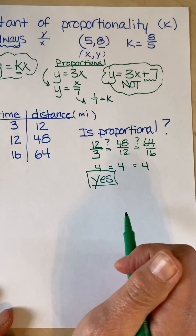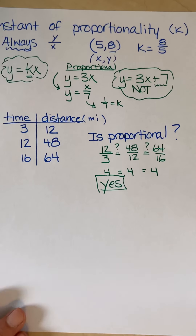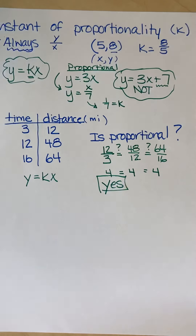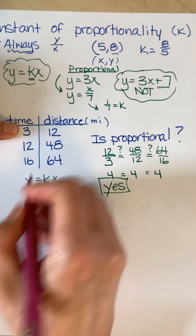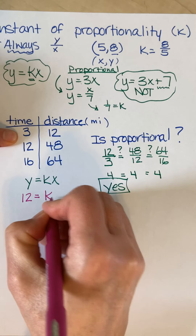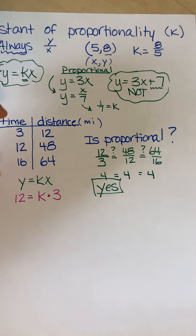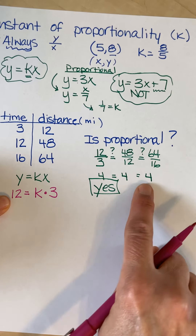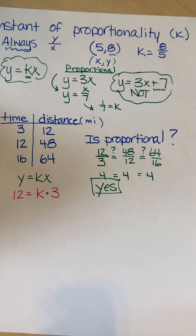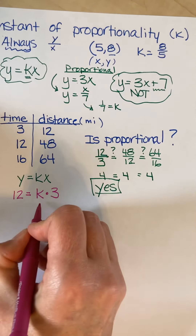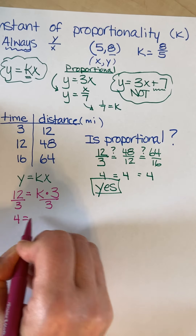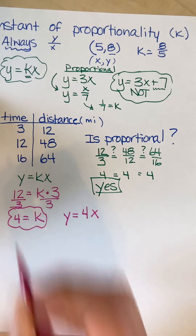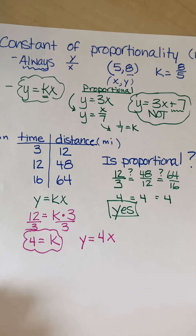Now if I wanted to write the equation for that, I use Y equals KX. I only need one point since they're all the same. Using (3, 12): 12 equals K times 3. I divide both sides by 3 and get K equals 4. So the equation is Y equals 4X. Whatever I know, I can come up with the equation. If I know the equation, I can find K; if I know K, I can write the equation.